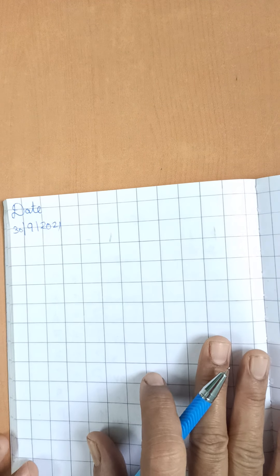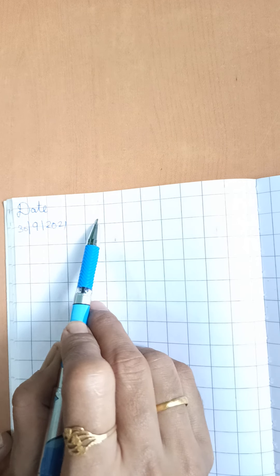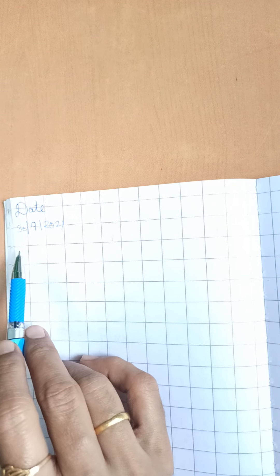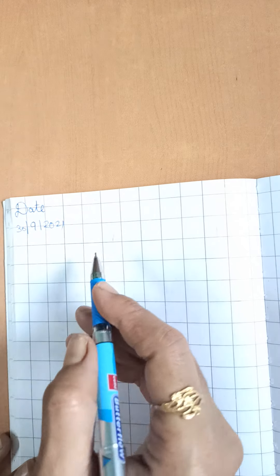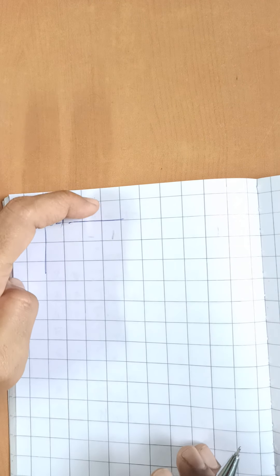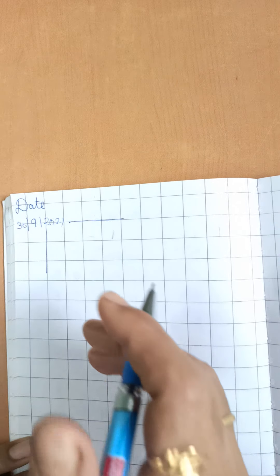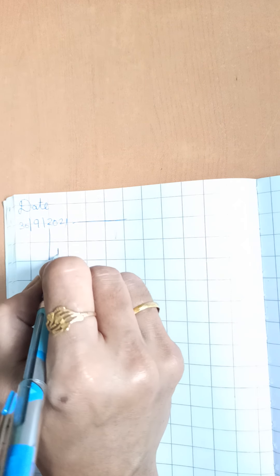Children, this is our math notebook. You have to leave this line and this box. And here also this box and this box. Means what, yeh aapka margin hai. Yeh place pe aapko likhna nahi hai. So, let us start with here.